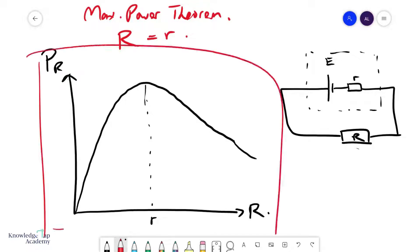In this P_R versus R graph, as you can see, if you allow your big R to equal small r over here, then you will get the maximum amount of power being dissipated.